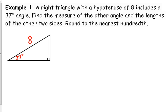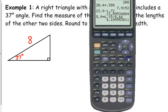The instructions say find the measure of the other angle and the lengths of the other two sides, round to the nearest hundredth. Okay, so obviously we are not given a lot of information here. However, because it is a right triangle, it is very easy to solve for that third angle. How do we find the third angle there?